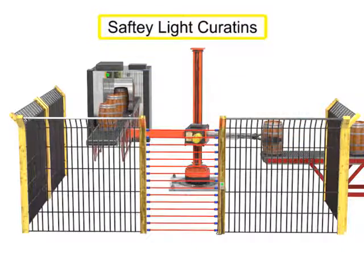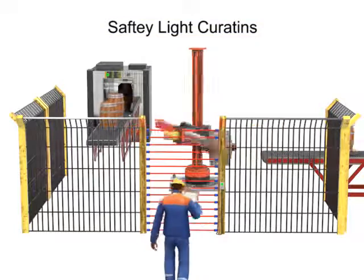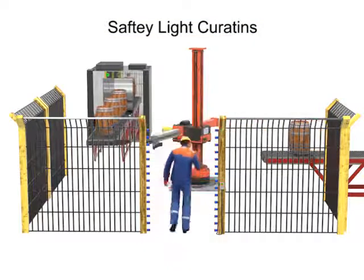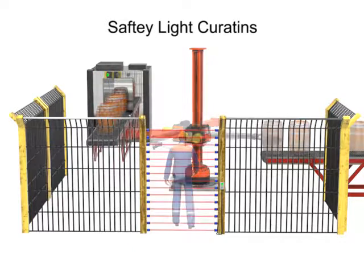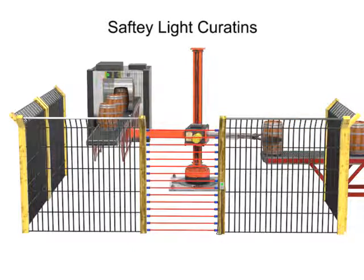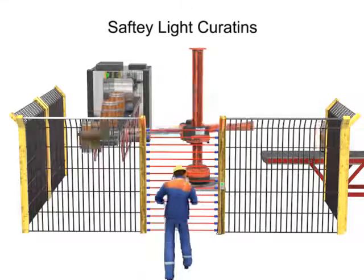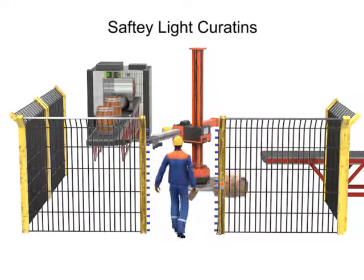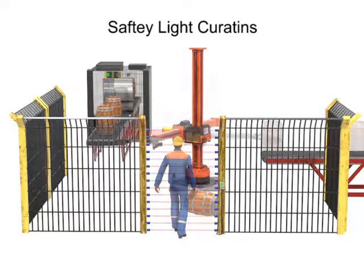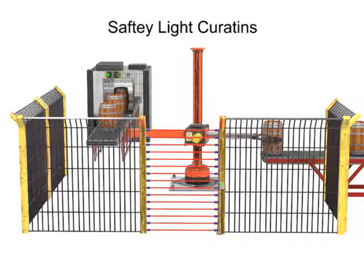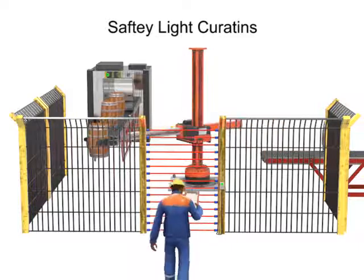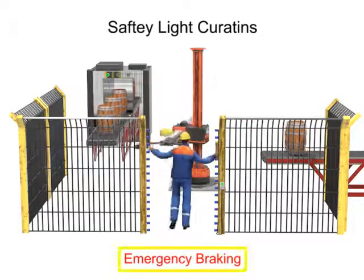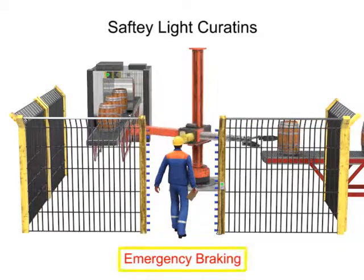Safety light curtains are another type of presence sensing device. When a person enters the work envelope, the light beam is interrupted, which sends a signal to the robot. For certain work scenarios, sudden stops could cause the work to become uncontained. Objects may continue to move even after the robot stops. In these cases, emergency braking of the robot is used in lieu of completely stopping. With emergency braking, the robot slows down work and does not stop suddenly.